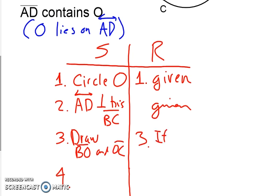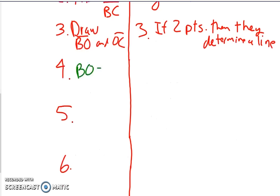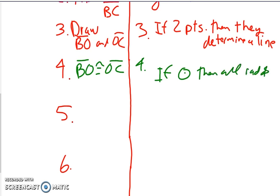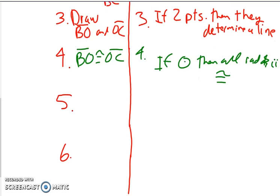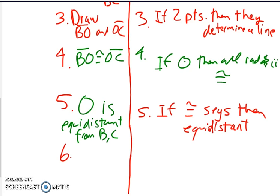Our reason: if two points, then they determine a line. Next, we know that BO and OC are congruent because they are radii of the same circle — reason: if a circle, then all radii are congruent. Something important we need to state now is that O is equidistant from B and C, so we'll include this step. Our reason is that reason from the previous video: if congruent segments, then equidistant.